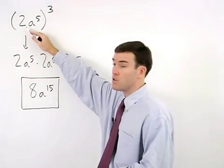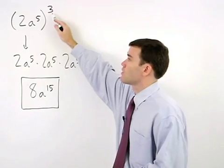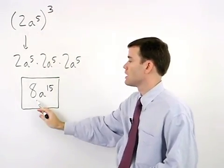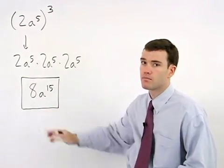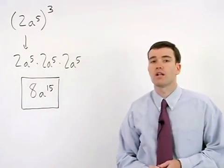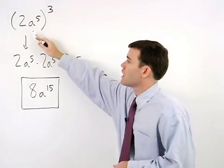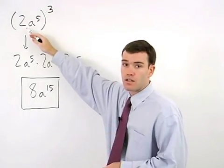But our coefficient is taken to the third power. 2 times 2 times 2 is 8. It's very important to understand the difference between the way you treat exponents and coefficients in this type of problem.